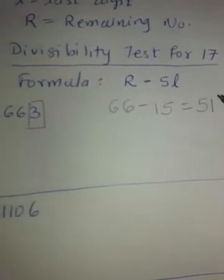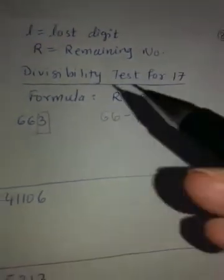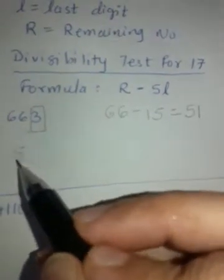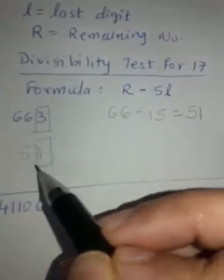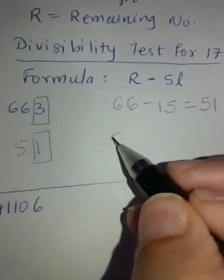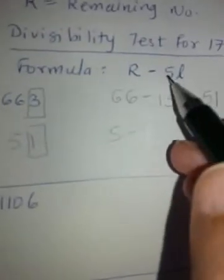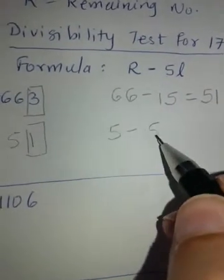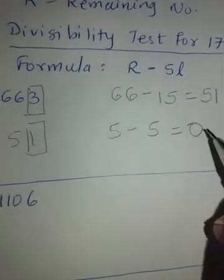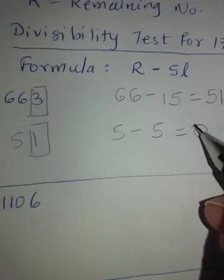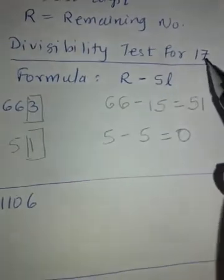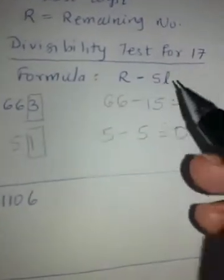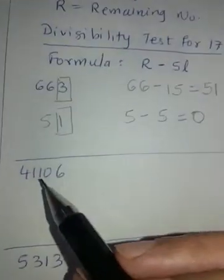Now if you don't know table of 17, what you can do is copy this 51 and again try the same formula. Last digit is 1, remaining number will be 5, minus 5L, 5 times 1 is 5 and this is 0. When the answer is 0, that means this number is divisible by number 17.